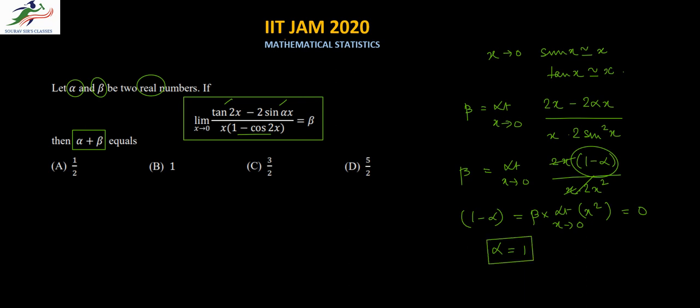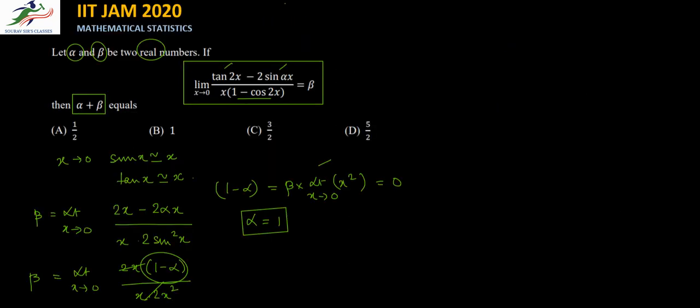Now we have to find the value of beta, so we need to actually find the limit of the function. We notice that the function is of the form 0 by 0, because tan 2x is 0 at x equal to 0, sin(alpha x) is 0 at x equal to 0, and x is in the denominator. Whenever we have this form, we apply L'Hôpital's rule.